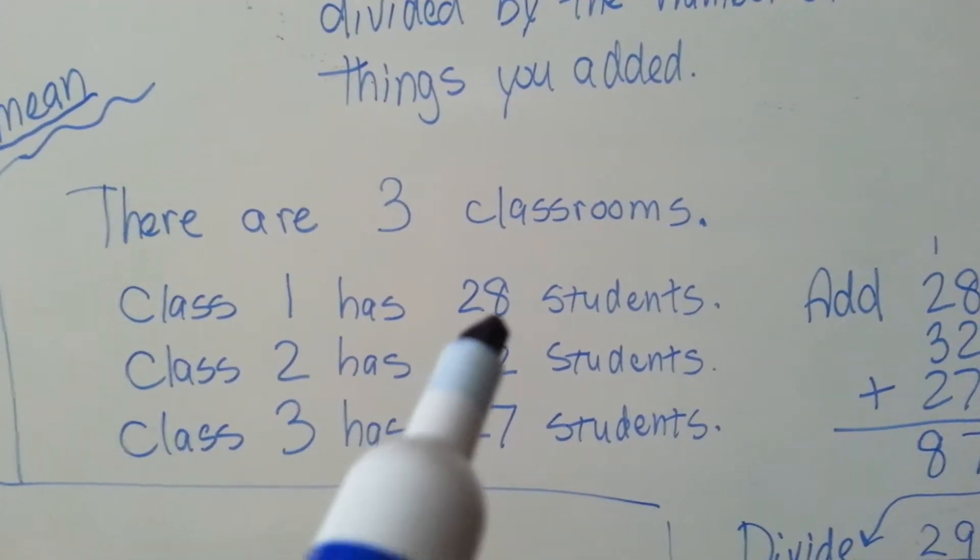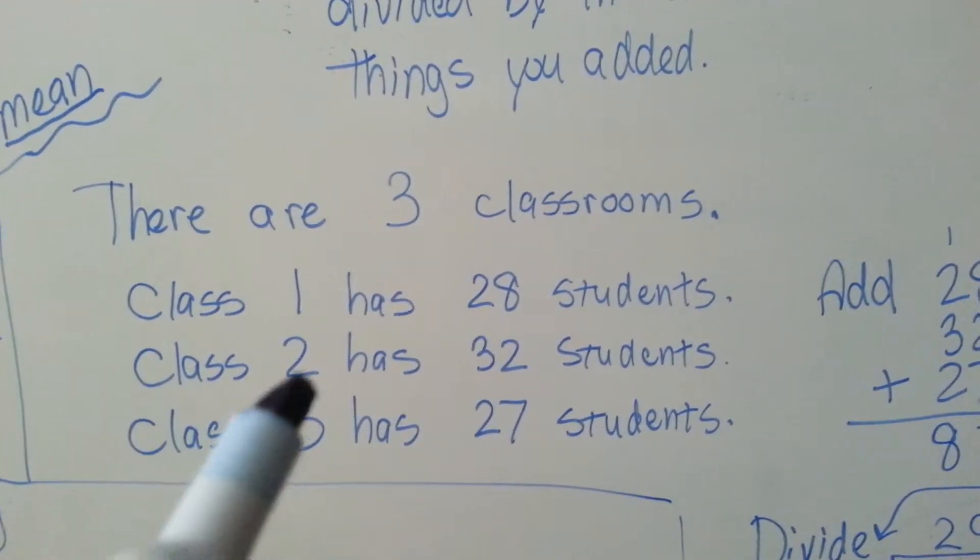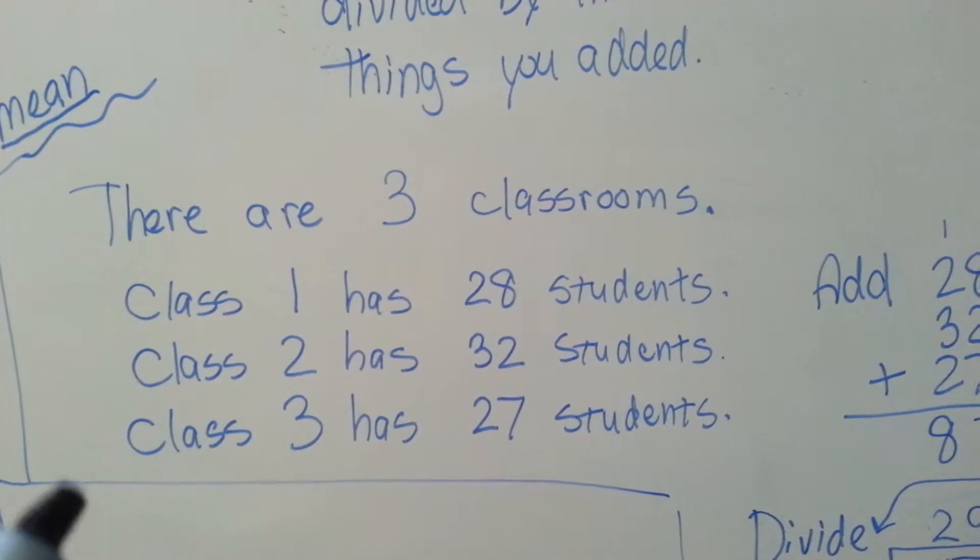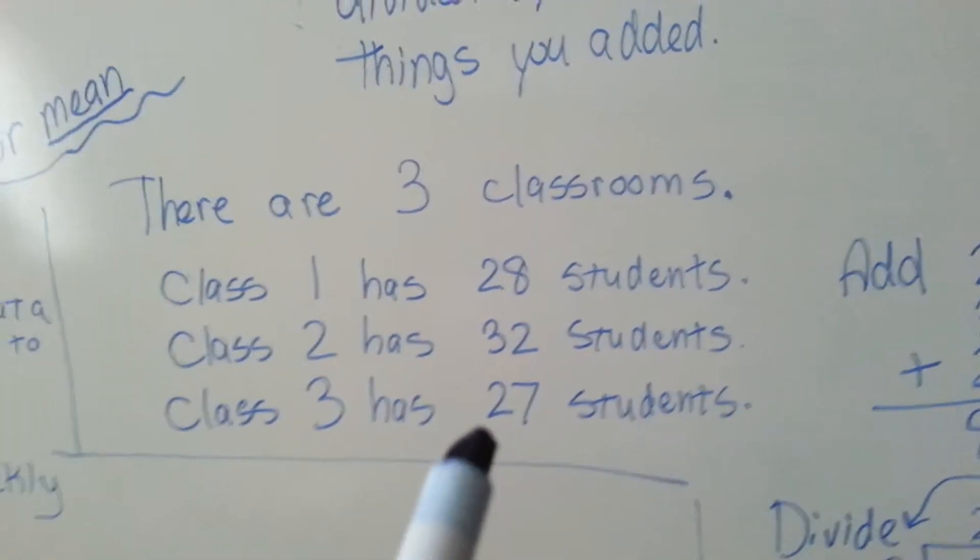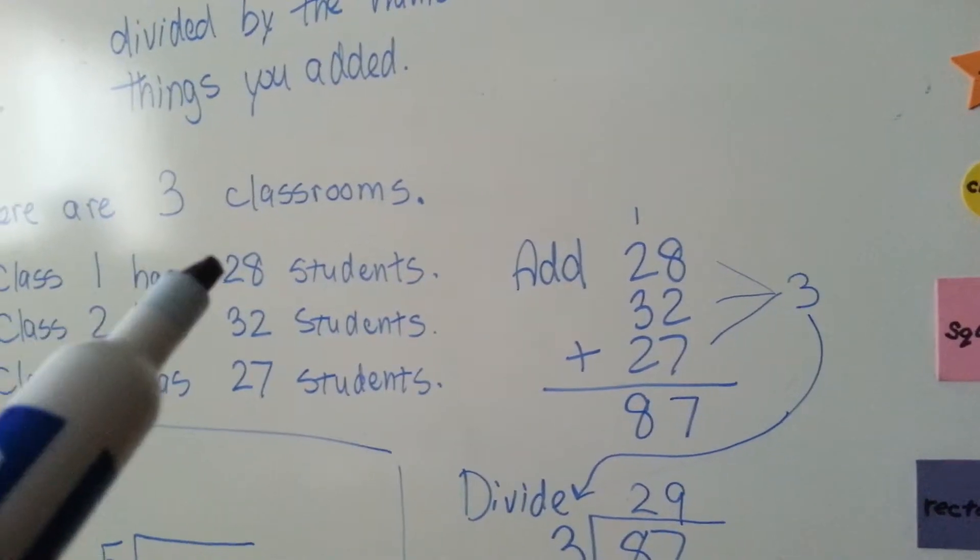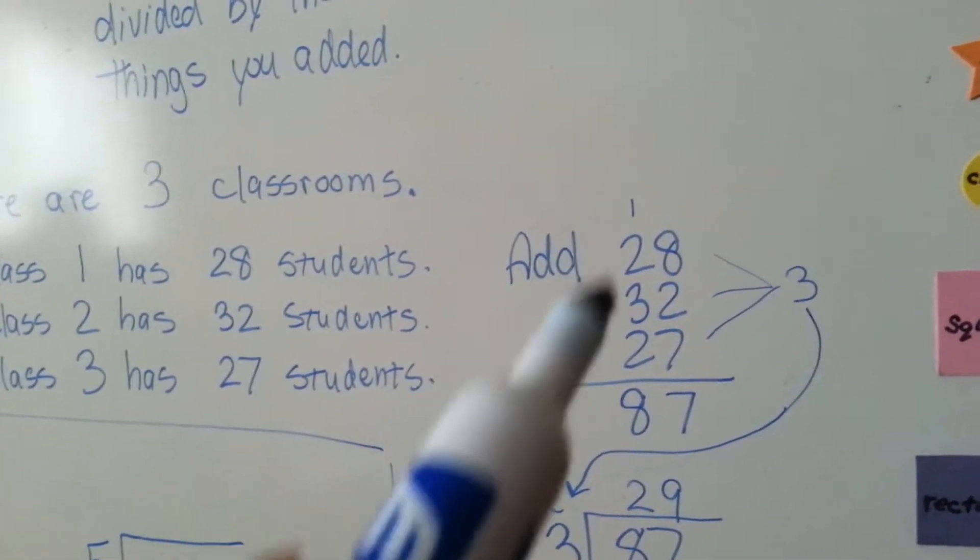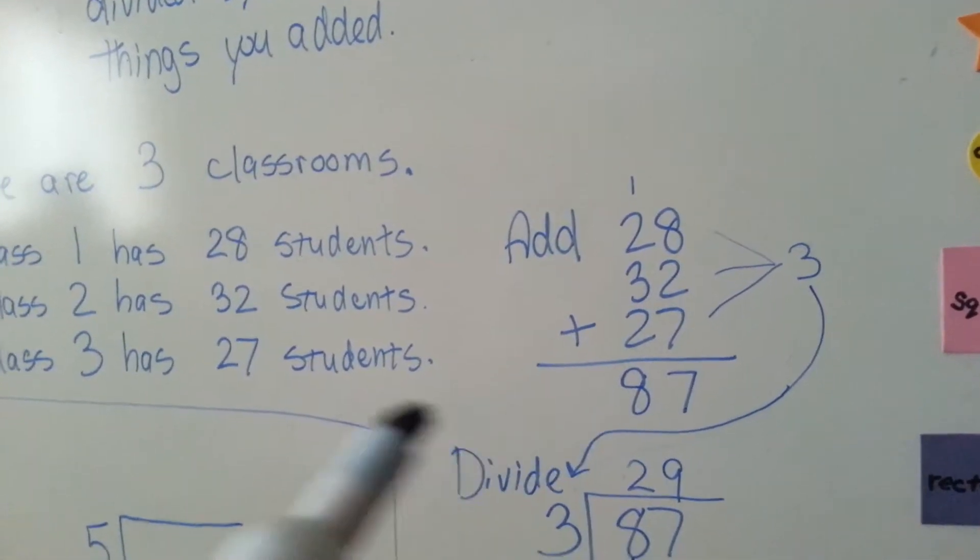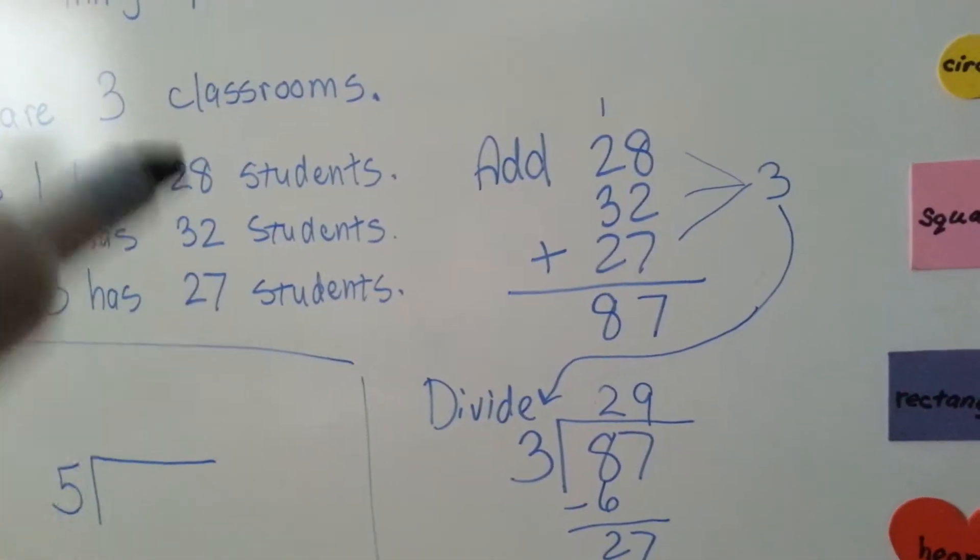If class one has 28 students, and the second classroom has 32 students, and the third classroom has 27 students, what you would do is you would add the 28, the 32, and the 27, and then you would divide them by the number of things you added.